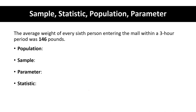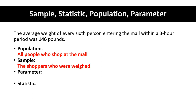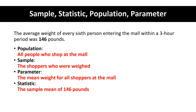The average weight of every sixth person entering a mall within a three-hour period was 146 pounds. The population for this situation is all people who shop at that certain mall. The sample would be the shoppers who were weighed. The parameter would be the mean weight for all shoppers at the mall. The statistic, the value coming from the sample, is the sample mean of 146 pounds. The idea with inference is we would use this sample to estimate this parameter.